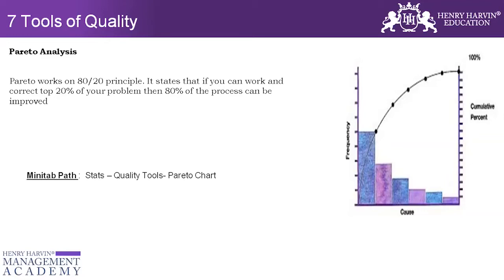The 80/20 ratio is a standard — we don't always have to strive for exactly 80 or 20 percent. Sometimes we focus on 75 percent, sometimes 82 percent. It's just a standard which says that if we focus on the top 20 percent of problems, we will be able to improve around 80 percent of our issues. So 20 percent of the defects contribute to 80 percent of the total defects.